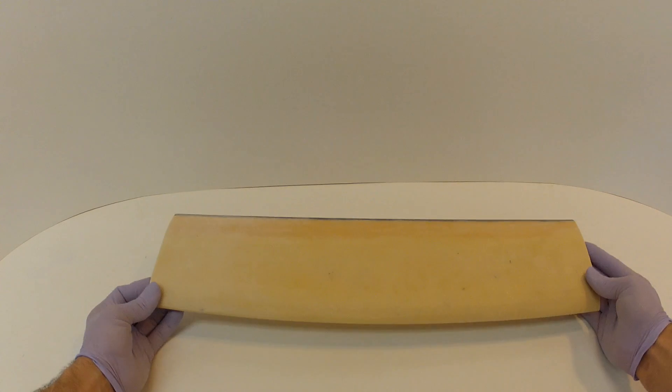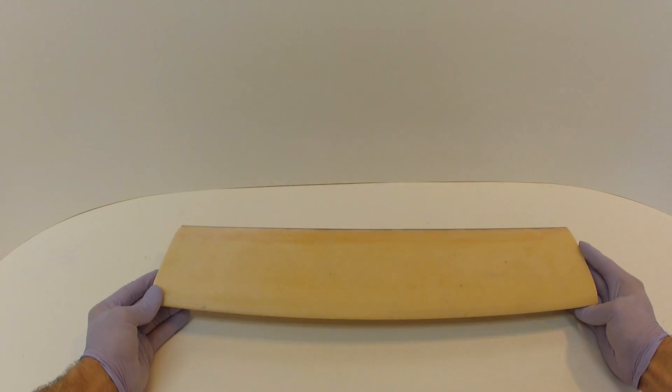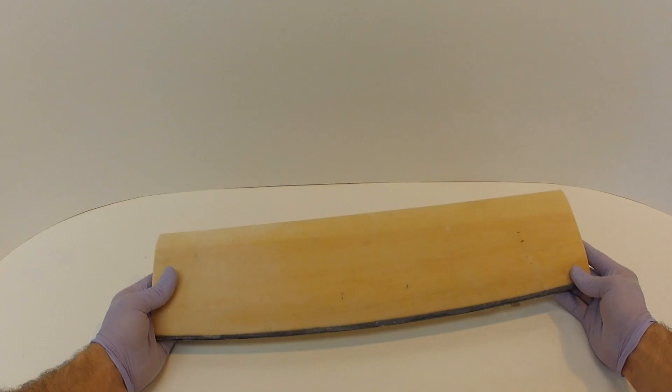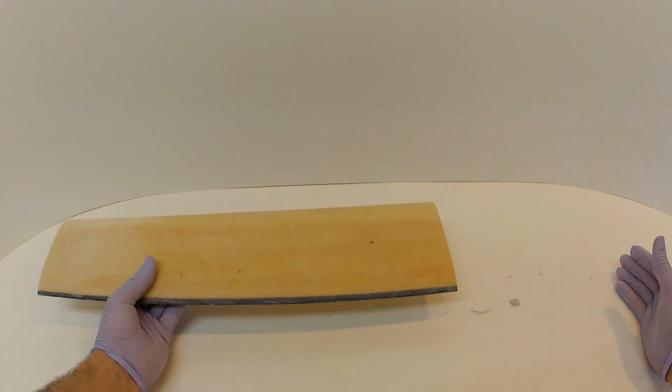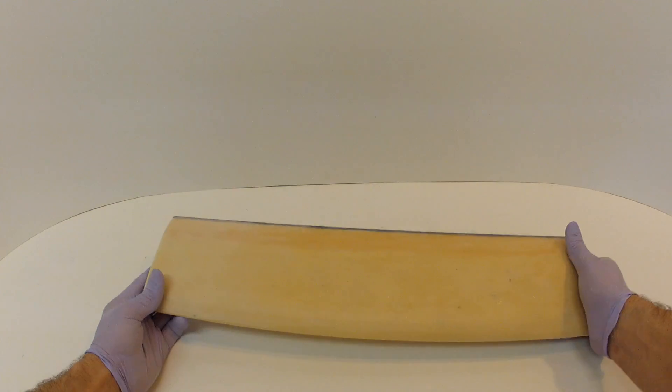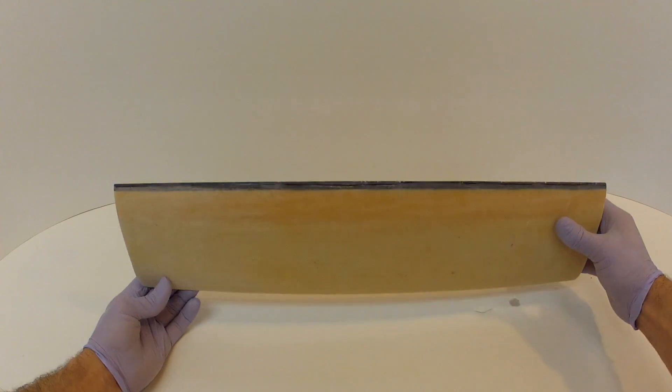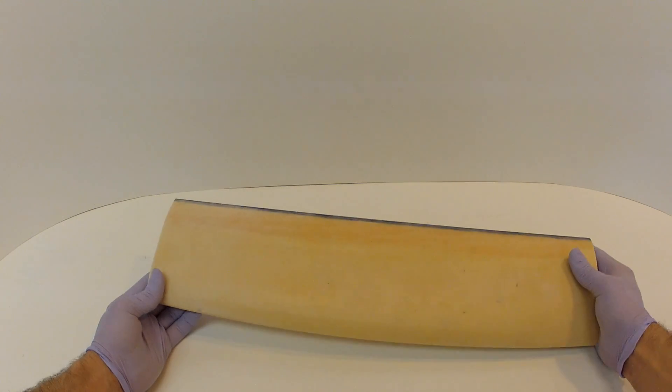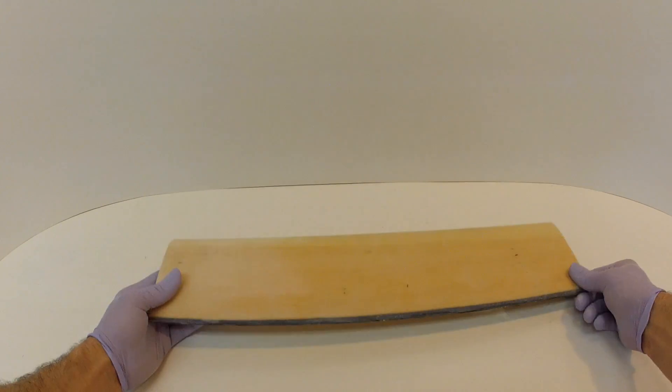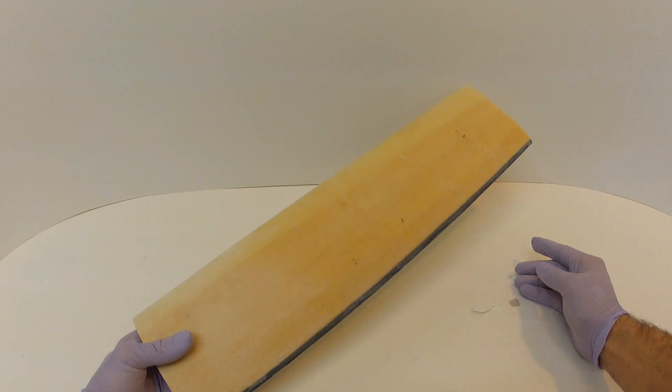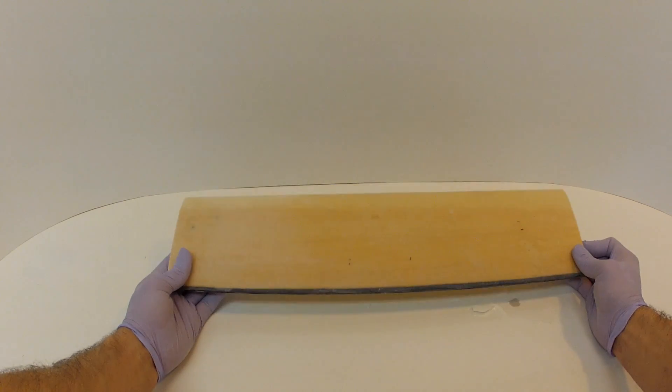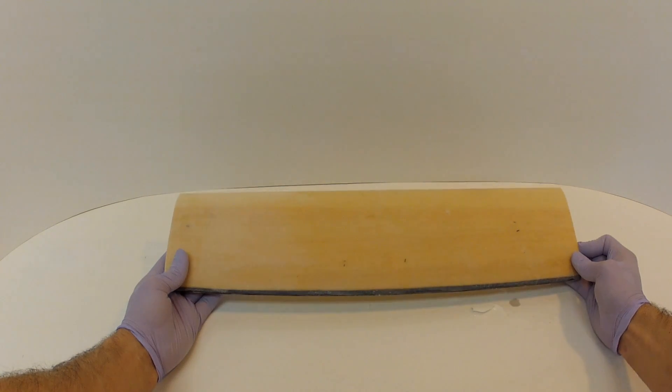Alright, so for this build I'm not going to be actually building a new mast because I already had built this mast for a different foil that I was trying something new on. I didn't like how it came out, it didn't come out as good as I thought it would, so I didn't end up using it. I'm going to use this for this foil.